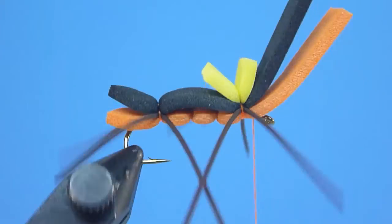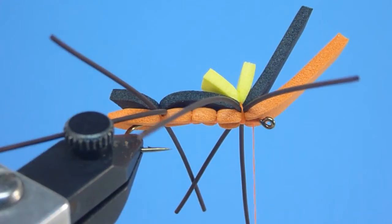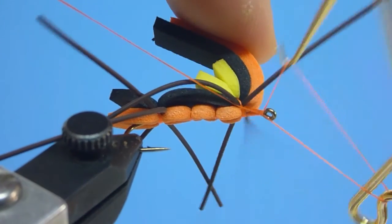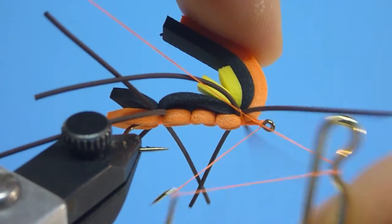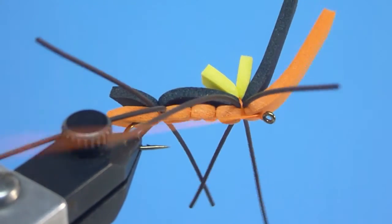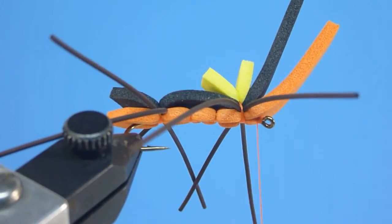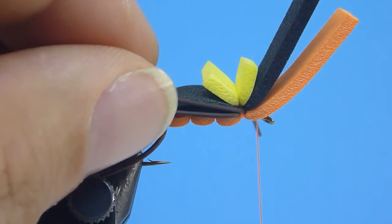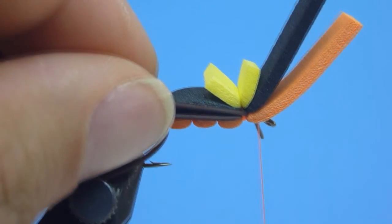Once built, we'll next go ahead and carefully install underneath our black and orange body strips, and just behind our hook eye, a nice, neat whip finish. Naturally, once snugly whipped, we're now free to carefully trim away, closely at the whip knot's base, our excess tying thread.